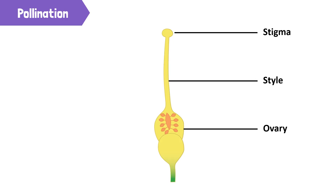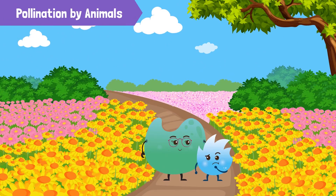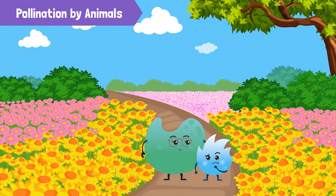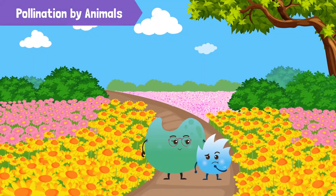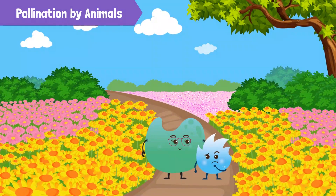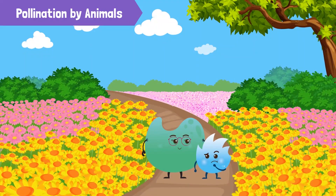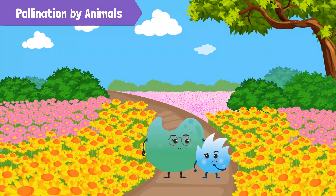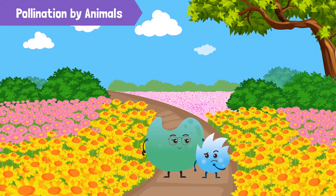This process is called fertilization. This is why some flowers that require cross-pollination have bright-colored petals, fragrance, and nectar so that they can attract animals like birds, bats, and bees for pollination.